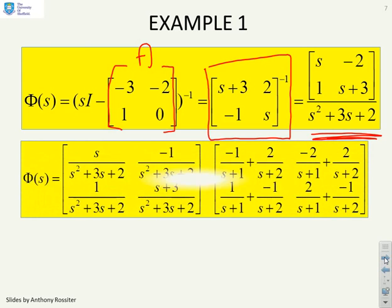Now I'm going to separate that into the four different components. So you'll see I've got a (1,1) component. There it is: s over (s squared plus 3s plus 2). I've got a (2,1) component. There it is: 1 over (s squared plus 3s plus 2) and so on.